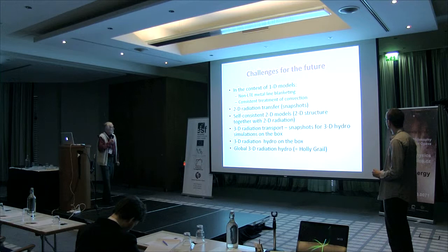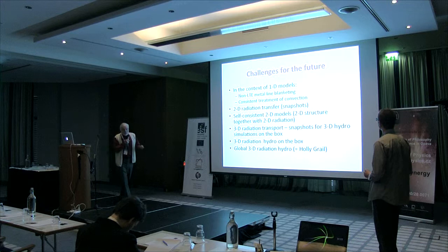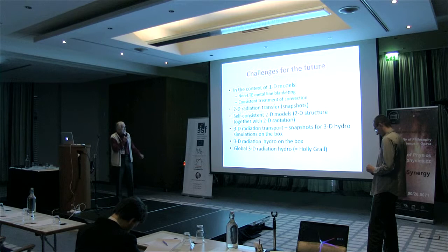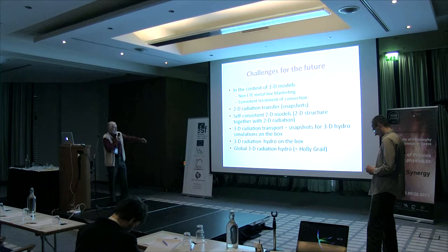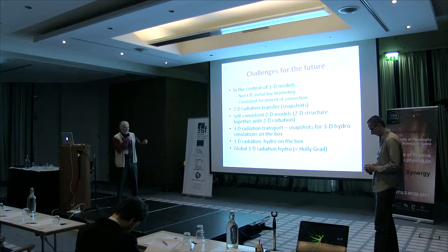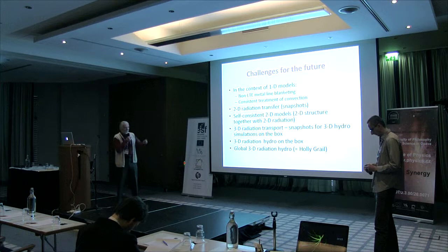I finish by listing future challenges. Within 1D, one needs to include metal lines and consistent treatment of convection to handle cool annuli. Then one must perform 2D radiation transfer on hydro simulation snapshots, followed by self-consistent 2D models — 2D structure with 3D radiation. Then 3D radiation on snapshots of 3D hydro boxes, then fully coupled 3D radiation hydro resolving MRI scales, and finally the holy grail: doing the whole thing in 3D. Thank you.